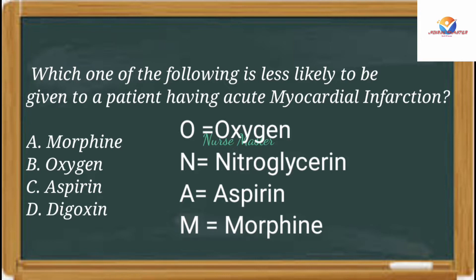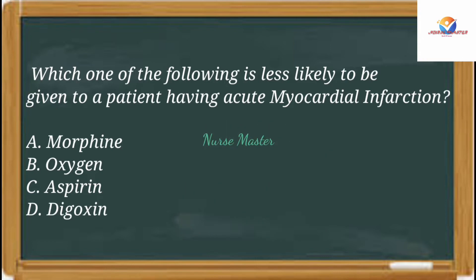Nitroglycerin reduces cardiac preload and afterload and reduces coronary artery spasm. Aspirin inhibits platelet activation and aggregation. Before giving aspirin, check if the patient has aspirin allergy or signs of active or recent GI bleeding.